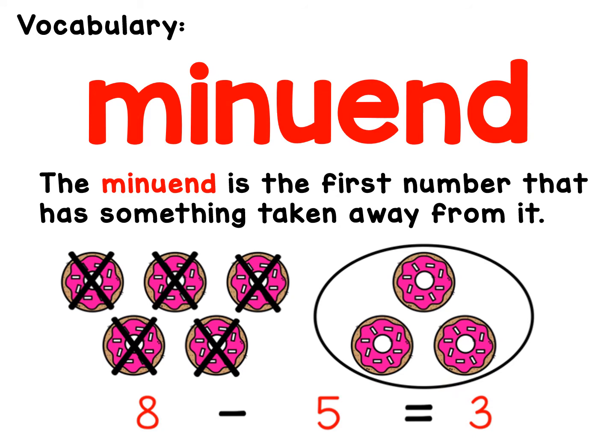Okay, now we're going to review a really fancy word called the minuend. The minuend is the first number in a subtraction sentence. It's the number that has something taken away from it. So in eight minus five equals three, the minuend is the eight.